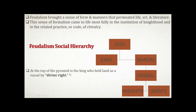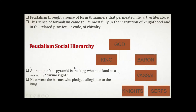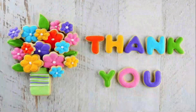At the top of the pyramid is the king, who held land as a vassal by divine right. Next were the barons, who pledged allegiance to the king. The system worked its way down to the knights and serfs.